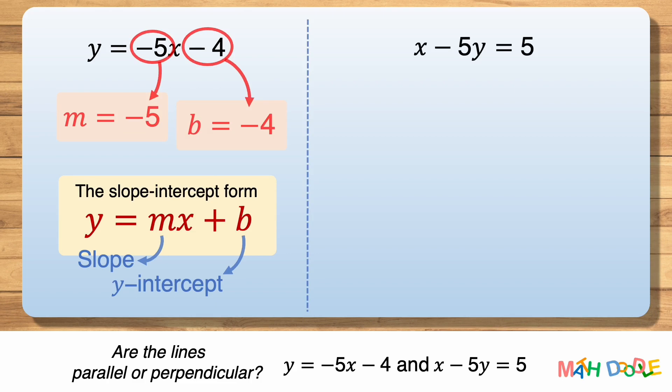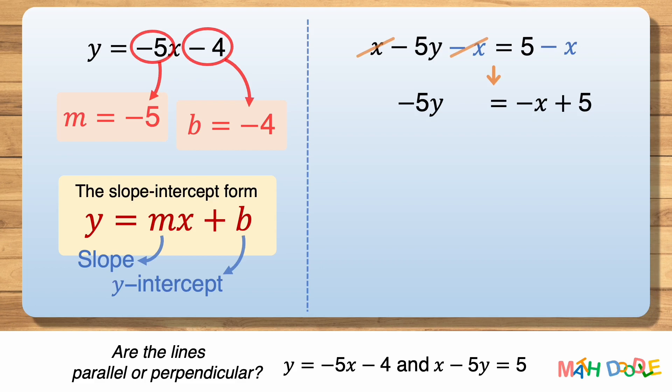To find its slope and y-intercept, we are going to write this equation in slope-intercept form. First, to eliminate x on the left side of the equation, let's subtract x from both sides. Then, to eliminate minus five in front of y, let's divide both sides by minus five. We now have the equation in slope-intercept form: y equals one fifth x minus one.